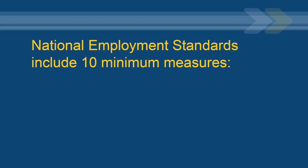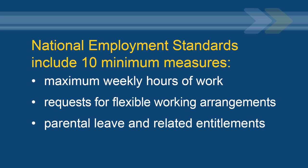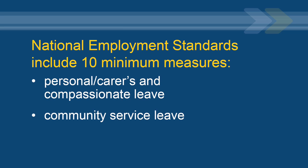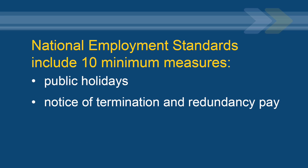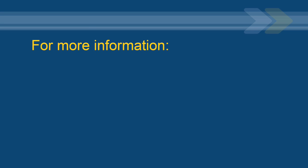The National Employment Standards include 10 minimum measures of employment you are entitled to receive. These standards are: maximum weekly hours of work, requests for flexible working arrangements, parental leave and related entitlements, annual leave, personal carers and compassionate leave, community service leave, long service leave, public holidays, notice of termination and redundancy pay, and provision of a Fair Work information statement. More detailed information about these standards and your workplace rights is available from the Fair Work Ombudsman website or by phoning 13 13 94.